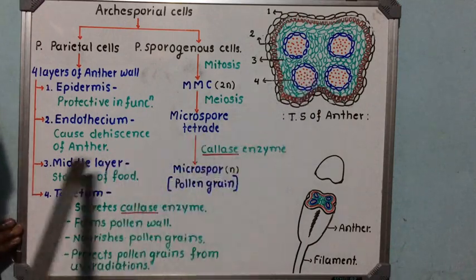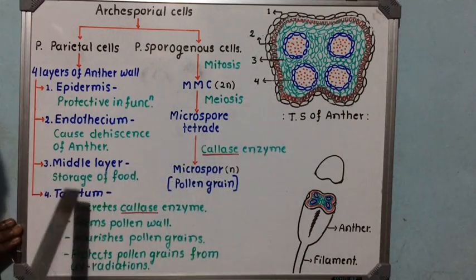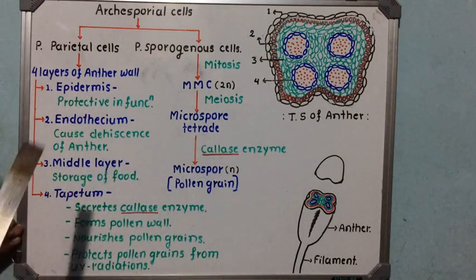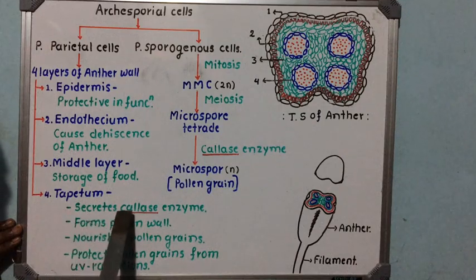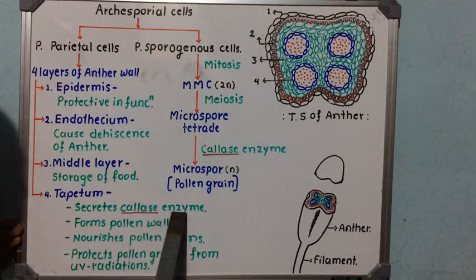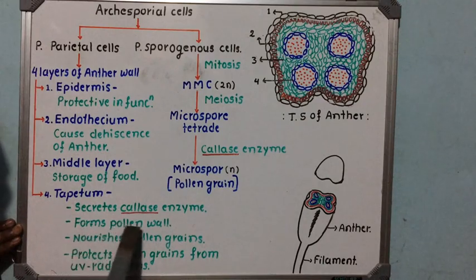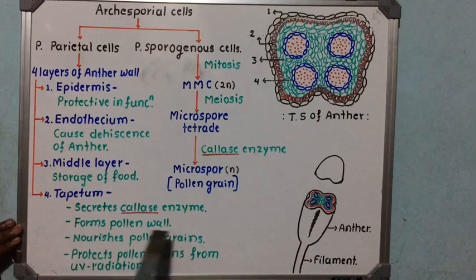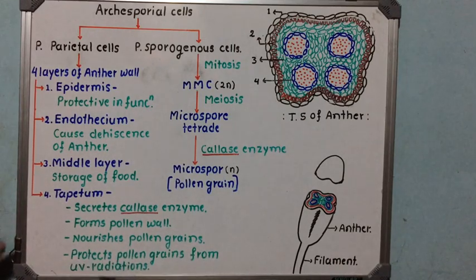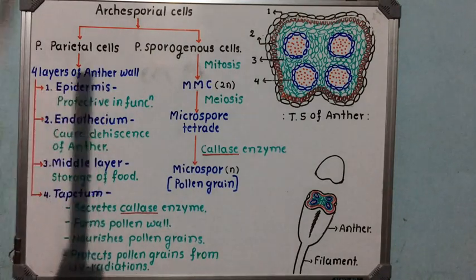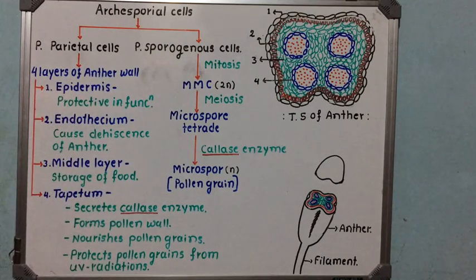The innermost layer is known as the tapetum. Tapetum performs very important functions: it secretes a specialized enzyme called callase enzyme, it forms the pollen wall, it gives nourishment to the growing pollen grains, and it also protects the pollen grains from ultraviolet radiation. These are the functions performed by the four layers of the anther wall.